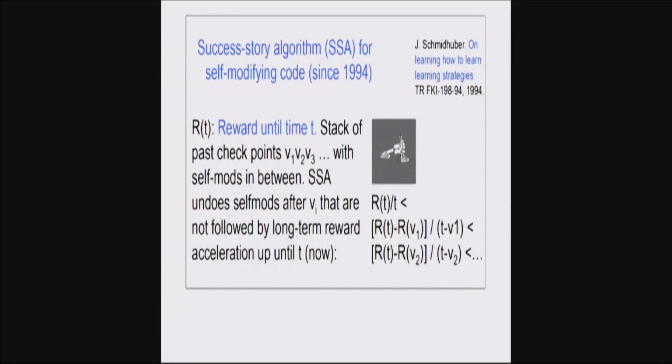Well, there's a particular instruction that the system can execute which is called the checkpoint instruction. Whenever it executes the checkpoint instruction, then the success story algorithm kicks in. What is that? It is an algorithm that keeps track of all the self-modifications of the system over time and it always measures, did I get more reward per time since the last checkpoint than during all the checkpoint intervals before? So, that's something that makes sure that you always have a reward per time acceleration. And to the extent that this condition doesn't hold at a certain point in time, you undo the self-modifications that were executed by the system itself. Which means you need something like a stack to keep track of the previous self-changes. And only the good ones survive.